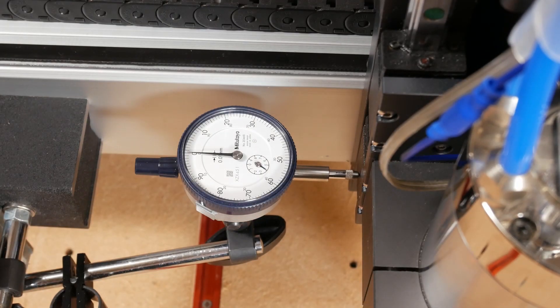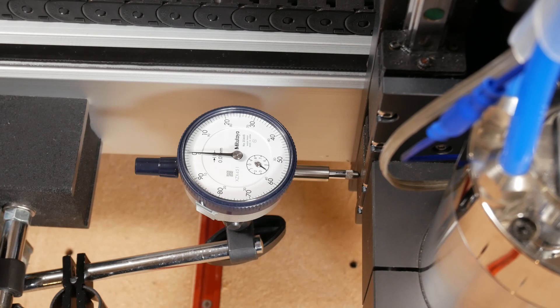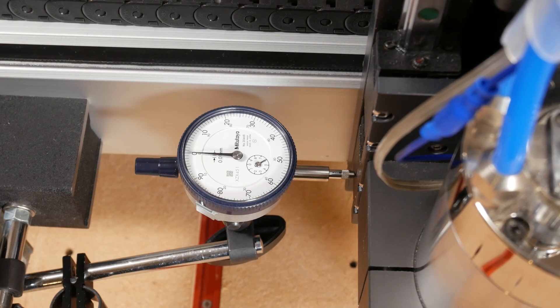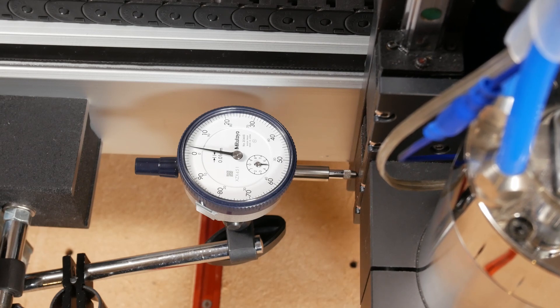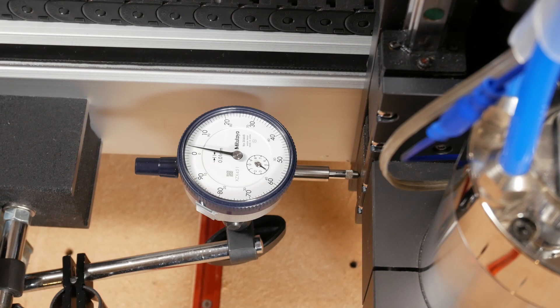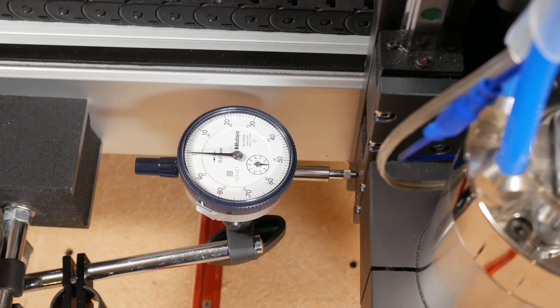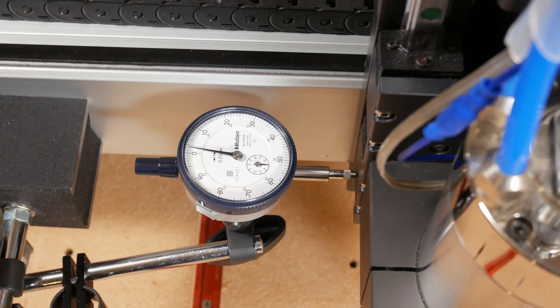On the Shapeoko, backlash occurs through a different mechanism and presents slightly differently. Here's backlash on the x-axis. We're measuring close to the belt to reduce the influence of other movements such as V-wheel deflection. The machine's being stepped in full millimeter steps, but you can see when it changes direction the dial doesn't quite come back to zero.